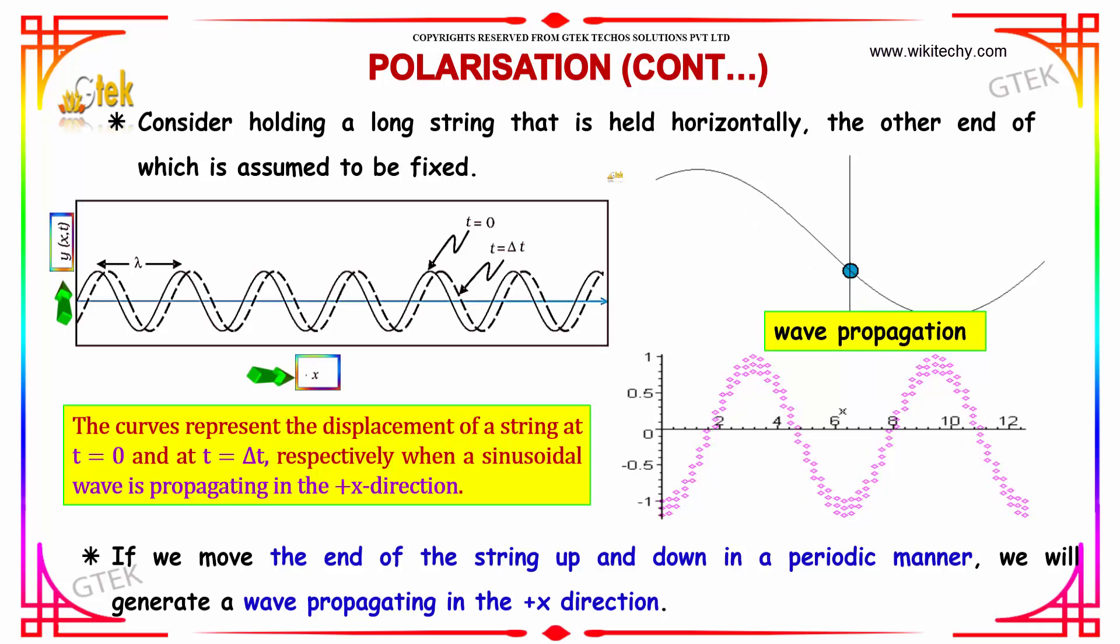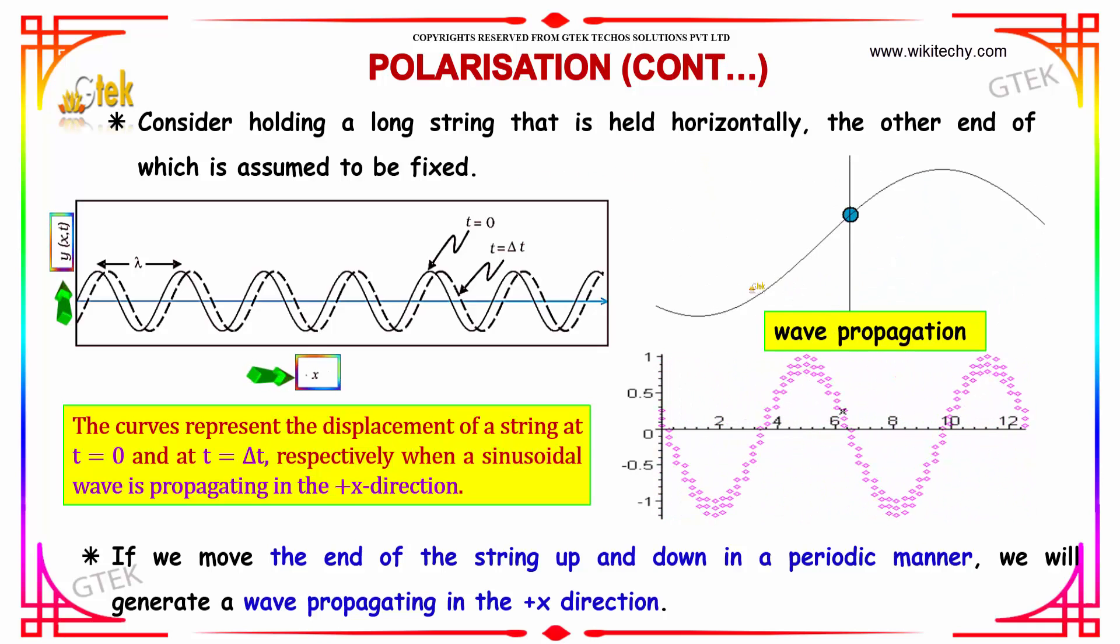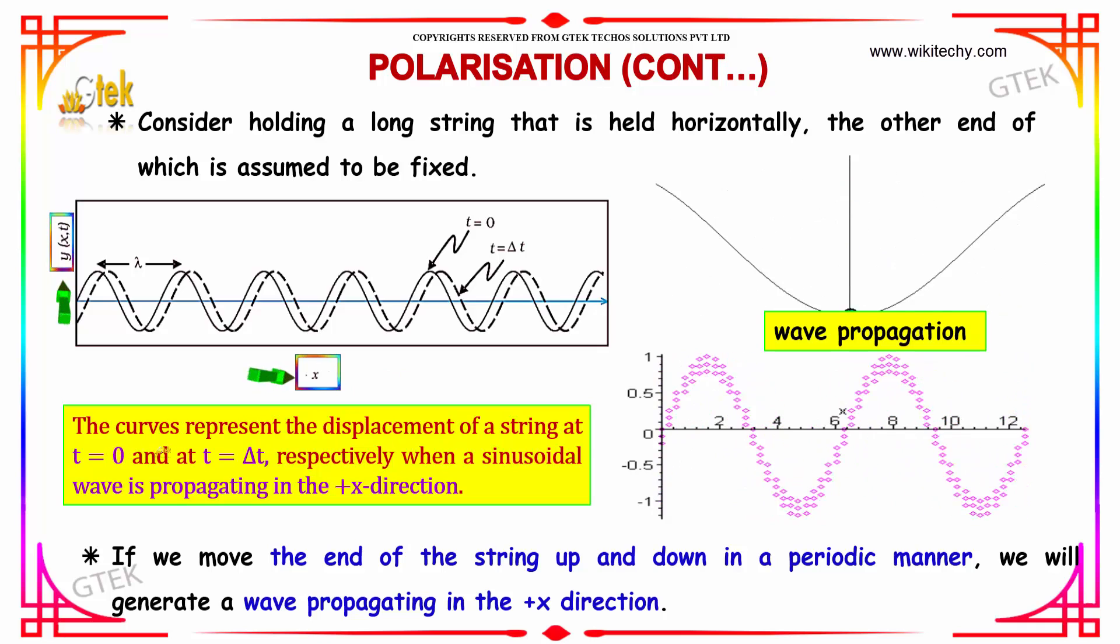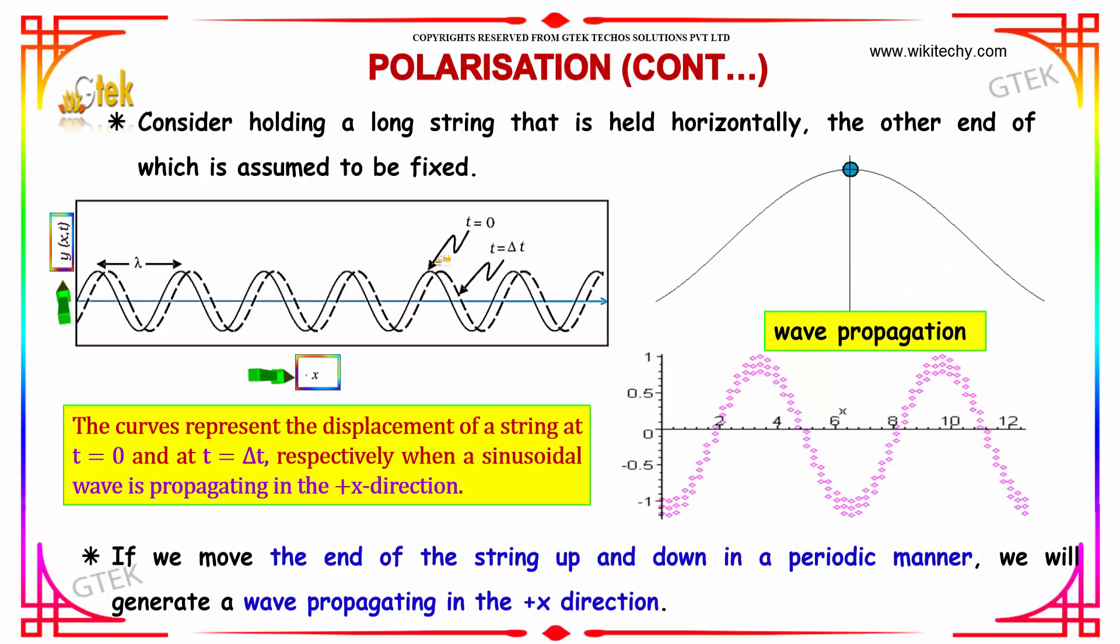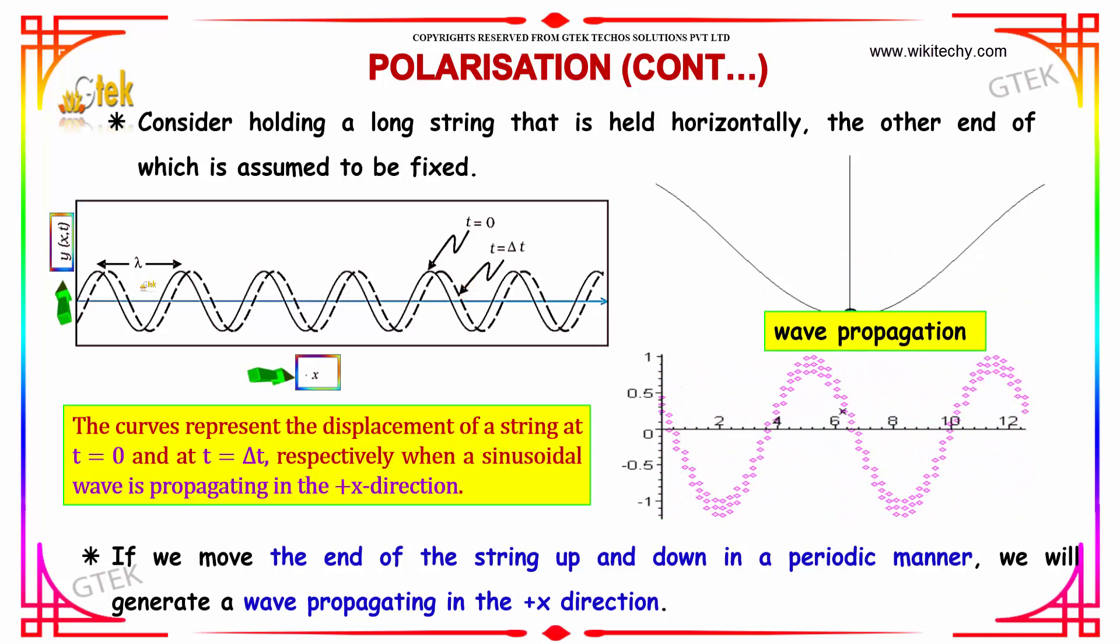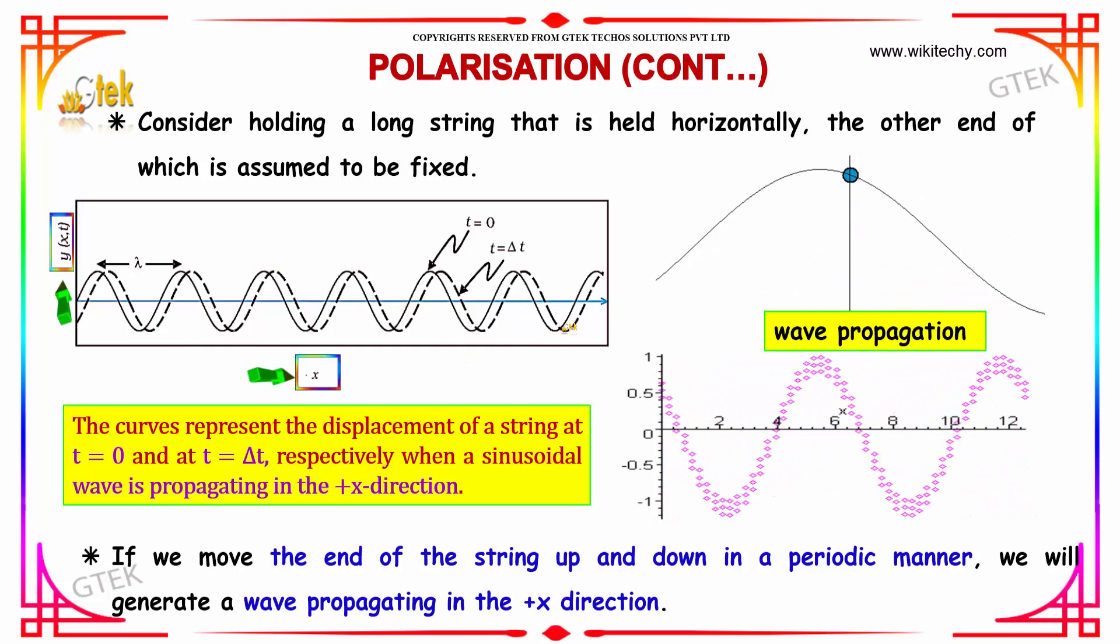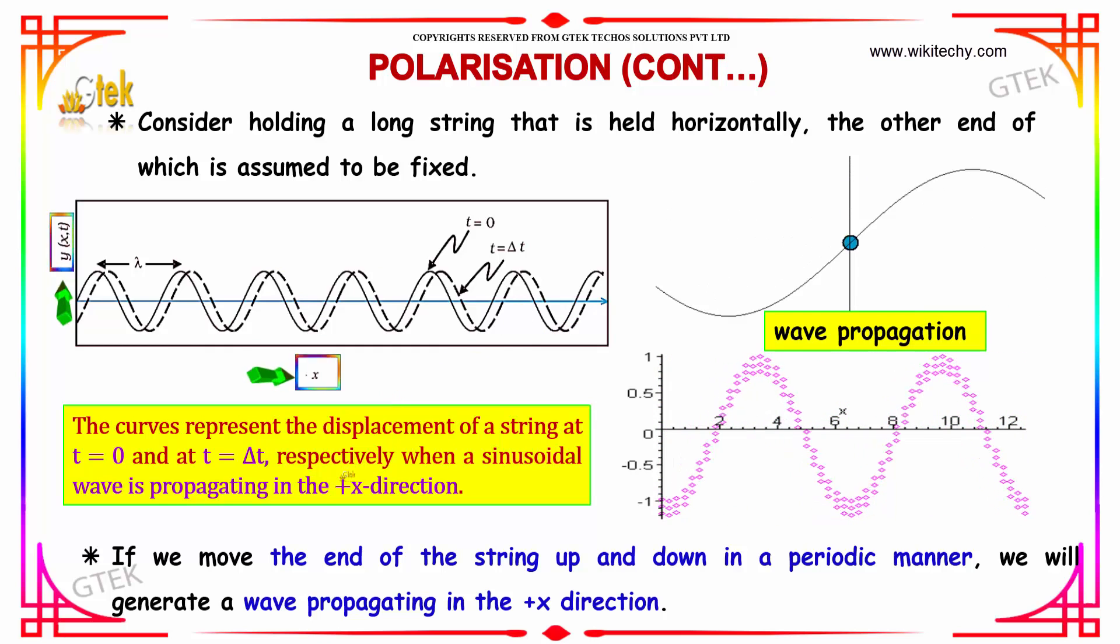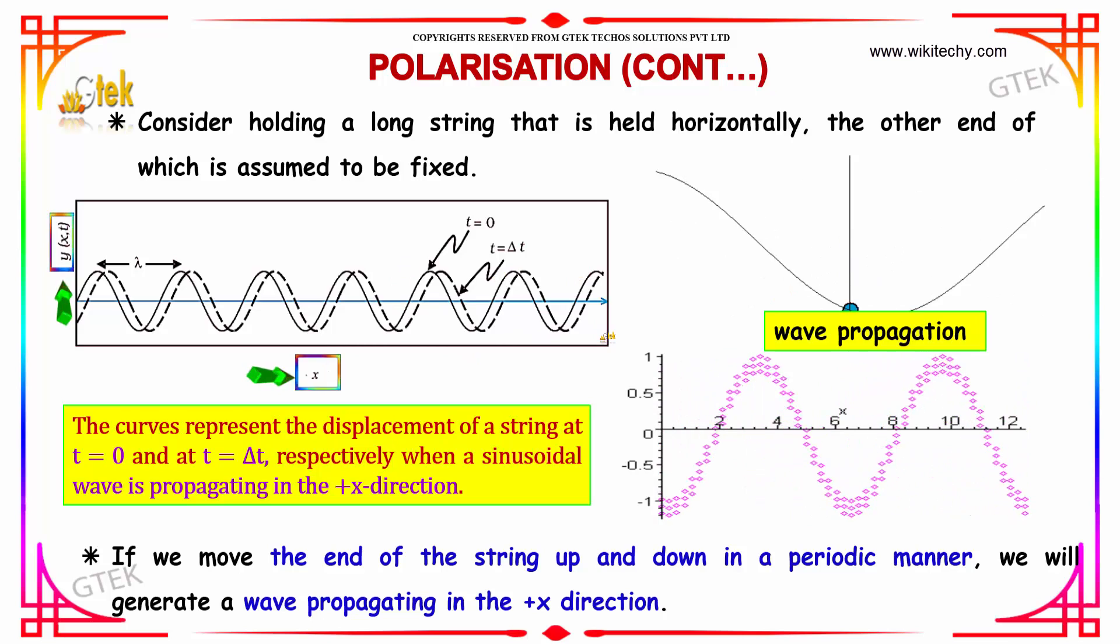Consider holding a long string that is held horizontally, the other end of which is assumed to be fixed. The curves represent the displacement of a string at t = 0 and t = Δt respectively when a sinusoidal wave is propagating in the x direction. If we move the end of the string up and down in a periodic manner, we will generate a wave propagating in the x direction.